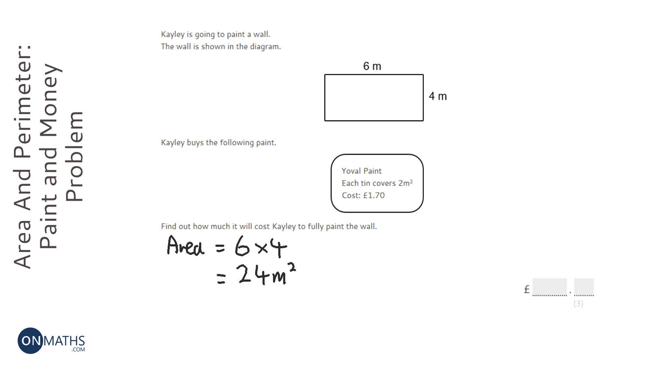Next thing we've got to work out is how many tins of paint we need. We've got to cover 24, and each tin of paint covers 2 metres squared, so it's going to be 24 divided by 2, which is 12 tins of paint.